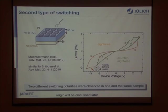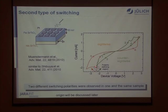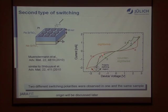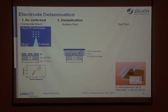But if you have a closer look, you can have a situation which is much more complicated and unexpected. You can have two types of switching polarities in one and the same device. At negative polarity, you can decide whether to continue on this counter-clockwise polarity, or if you further increase the device voltage, you end up on the orange curve, which we call the 8-wise switching curve. Similar things have also been observed for other materials in the literature, and we wanted to understand these different types of switching.